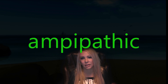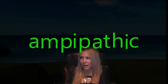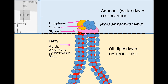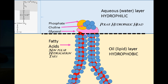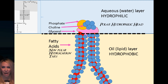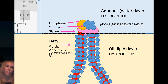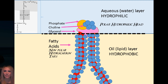Another term is amphipathic. If a molecule has both a hydrophilic end and a hydrophobic end, it's amphipathic. An example is a fatty acid. It has a hydrophilic head and a long hydrocarbon chain, which is the hydrophobic tail. The hydrocarbon chain shares electrons equally — it's all non-polar. On the hydrophilic head we do have a charge, and things that are charged like to interact with water because water has a partial charge.